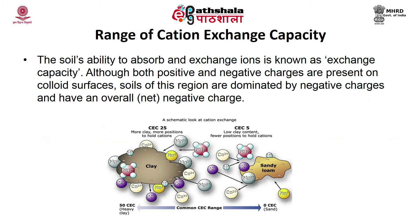The soil's ability to absorb and exchange ions is known as exchange capacity. Although both positive and negative charges are present on colloid surfaces, soils in these regions are dominated by negative charges and have an overall net negative charge. Therefore, more cations are attracted to exchange sites than anions, and soils tend to have greater cation exchange capacity compared to anion exchange capacity. Fine-texture soils usually have a greater exchange capacity than coarse soils because of higher proportion of colloids. In clay soil, more positions are available to hold cations compared to fewer positions in sandy loam soil.